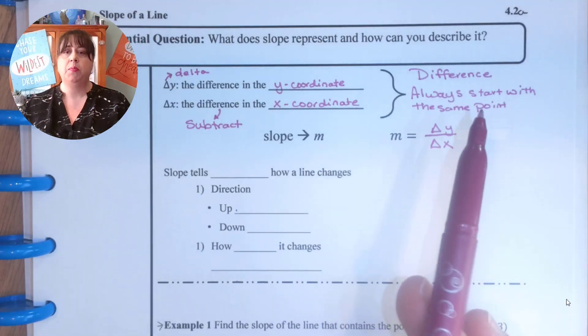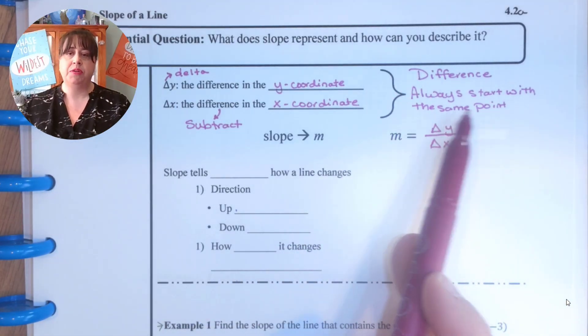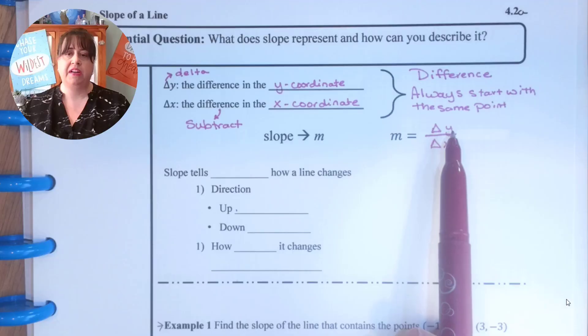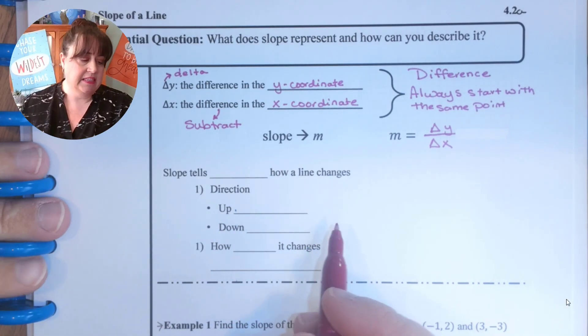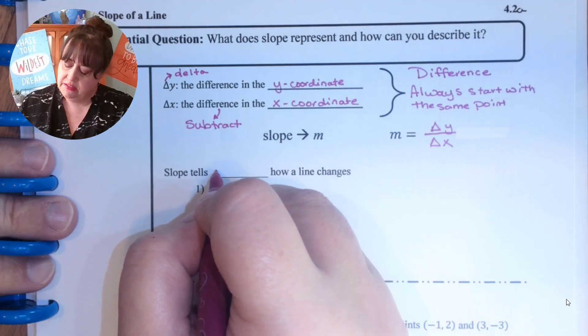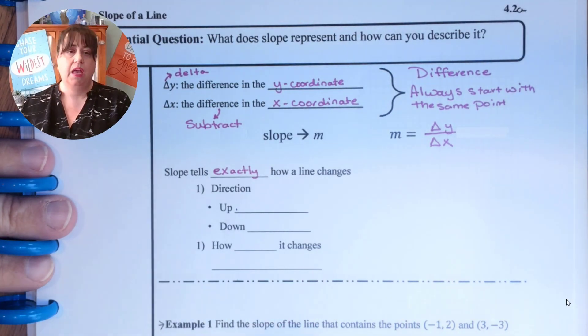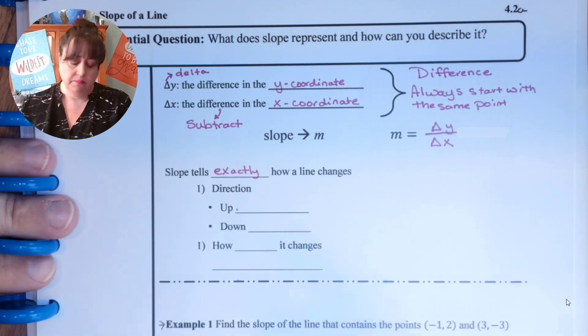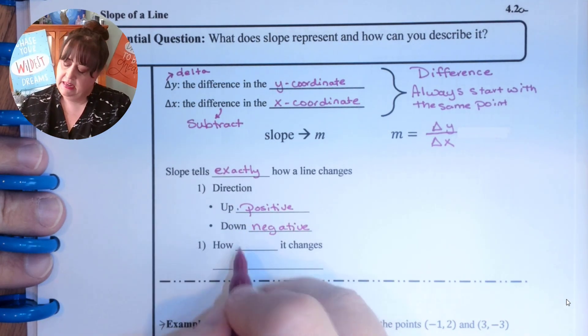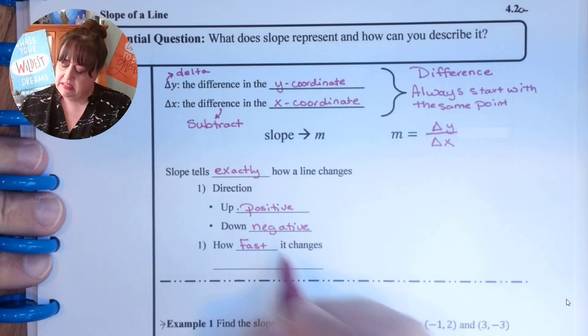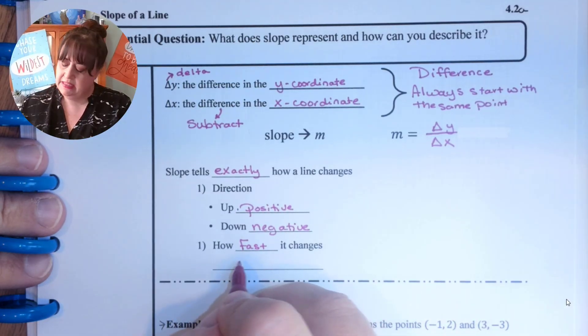I just remember that I'm finding the difference and I always start with the same point. So Slope tells us exactly how a line changes. It gives us the direction: if it's going uphill it's positive, if it's going downhill it is negative, and it tells us how fast it changes or the steepness.